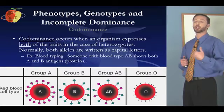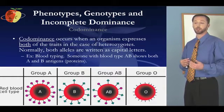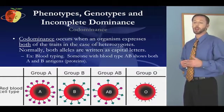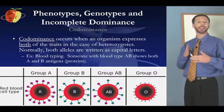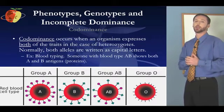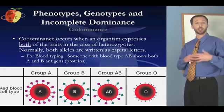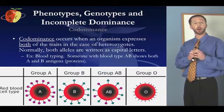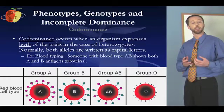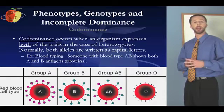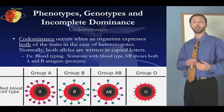There's also a situation called codominance, which is a little different from incomplete dominance. Codominance occurs when an organism expresses both traits in the case of heterozygotes — you get a dominant and a recessive, but they're both kind of dominant, so there's not really one that's recessive in the common sense. Going back to the flowers, this would be a case where a red and a white cross-pollinate and instead of getting pink, you get some red petals and some white petals. With incomplete dominance you got all pink petals; with codominance you get some red and some white petals.